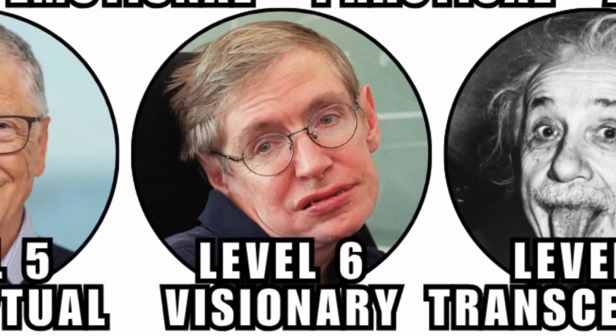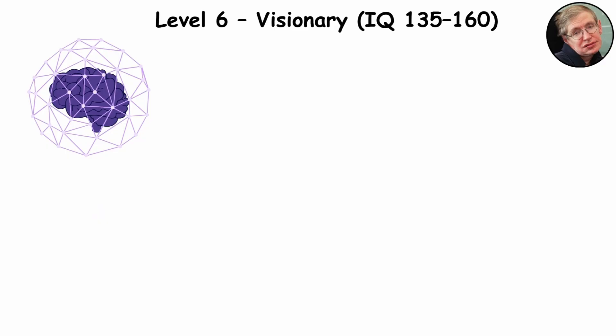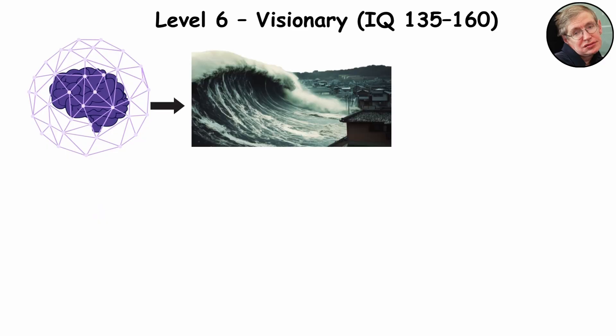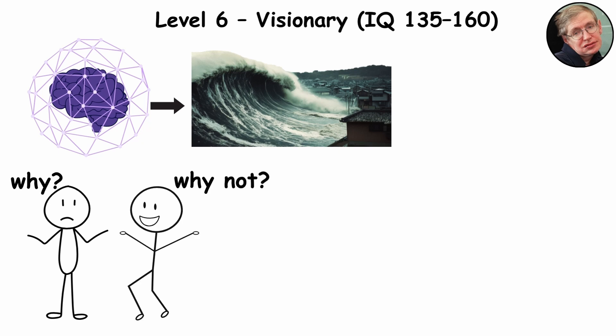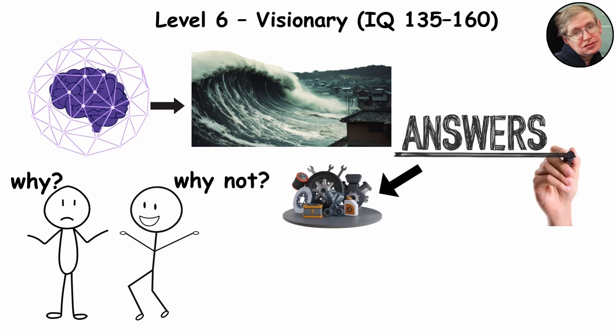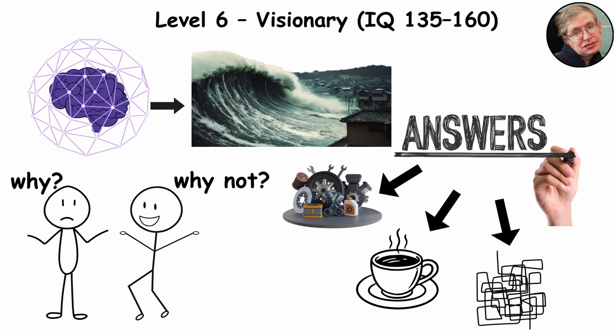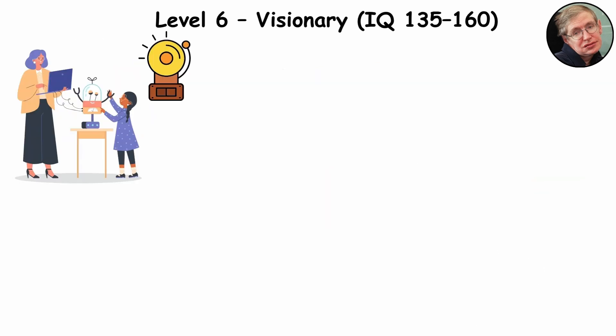Level 6. Visionary. This is where intelligence stops being a skill and starts becoming a force of nature. These people don't just ask why, they ask why not, and then actually build the answer out of spare parts, caffeine, and chaos.